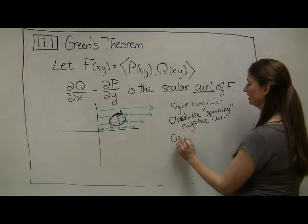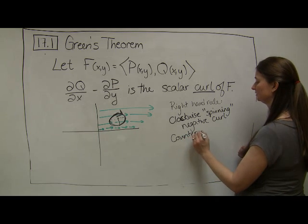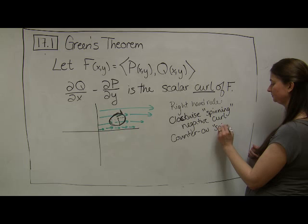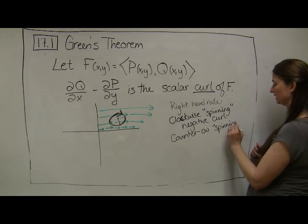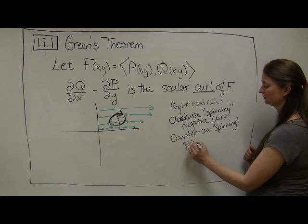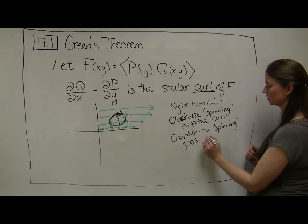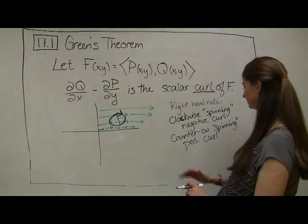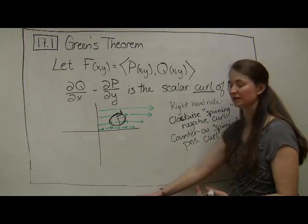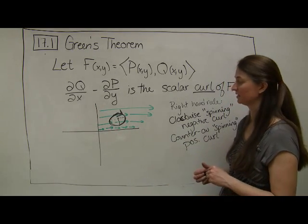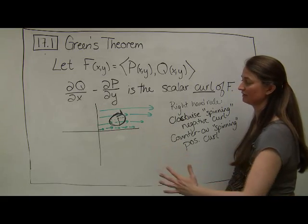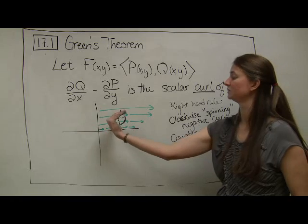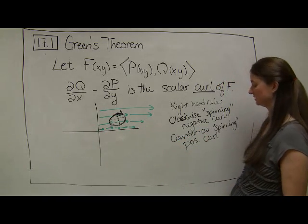Whereas if we have counterclockwise spinning, then we end up with positive scalar curl. That's because our hand would have been spinning in this direction, our right hand. Us left-handed people get confused sometimes, because we start doing it with our left hand, so I don't have to say, no, no, no. This is a right-hand rule, not a left-hand rule. So I have to use my right hand to tell me the direction of the scalar curl.